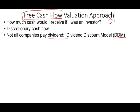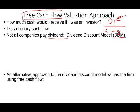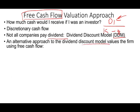The dividend discount model takes D1, the future dividend, divided by K — the required rate of return — minus G to value a company. But if the company doesn't pay a dividend, and a lot of companies don't, we're going to replace D1 with the future cash flow. That's basically all we're doing. If you understand the dividend discount model, this should be easy — it's an alternative approach to value a company using free cash flow.